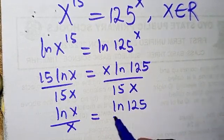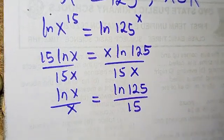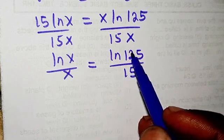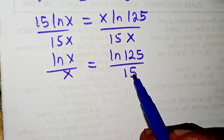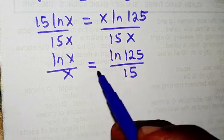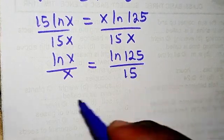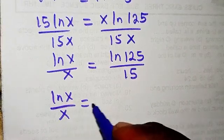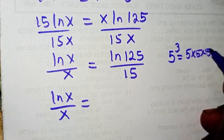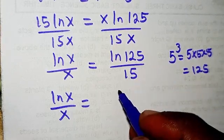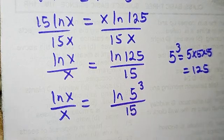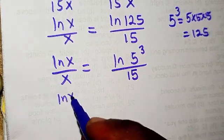On the right-hand side we have ln(125)/15. We need to simplify further. We know that 125 equals 5 raised to the power 3, since 5 multiplied by itself three times gives 125. So we can write this as ln(5³)/15.